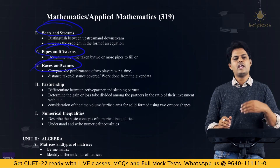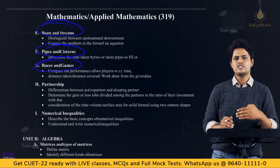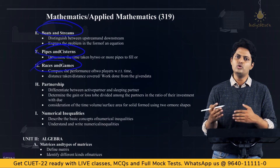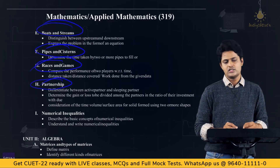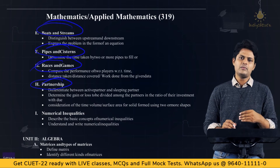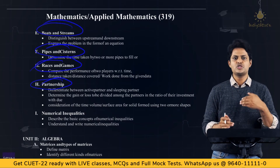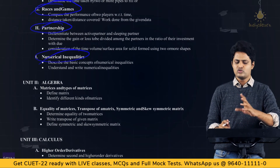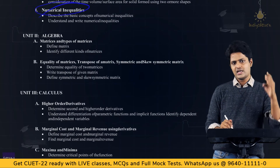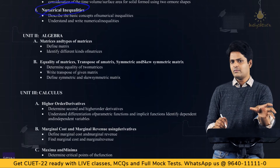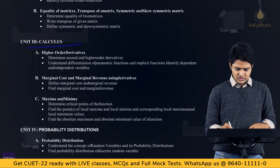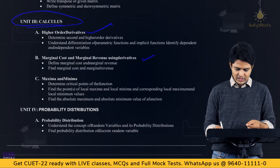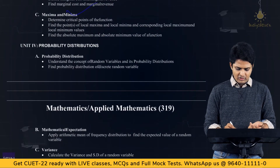Applied maths also includes problems related to races and games, partnership — covering active and sleeping partners, profit distribution based on investment ratio and time — numerical inequalities, and matrices. Unit 3 covers calculus with higher-order derivatives, marginal cost, marginal revenue, and maxima and minima.